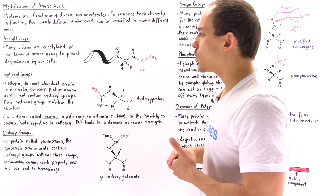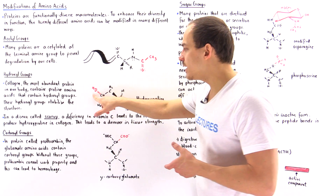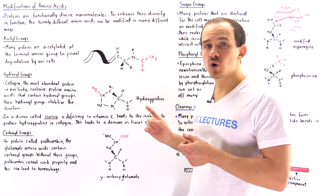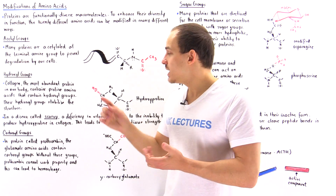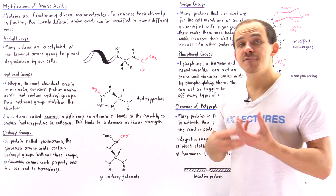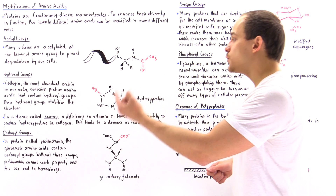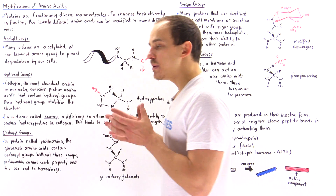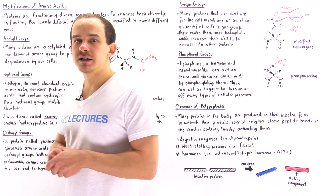Collagen, the most abundant protein in our body, contains proline amino acids modified with hydroxyl groups. As shown in the diagram, these hydroxyl groups give collagen its stability. If we can't produce these hydroxyproline groups, a disease known as scurvy results. In scurvy, the body has a deficiency of vitamin C, which is needed to convert proline into hydroxyproline. Because the amino acids can't be modified this way, the structure of collagen is destabilized, decreasing the strength of our tissue.